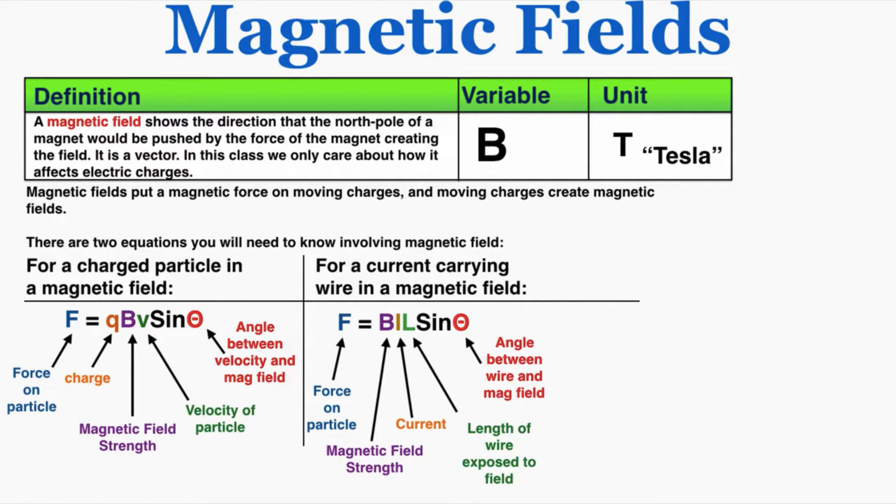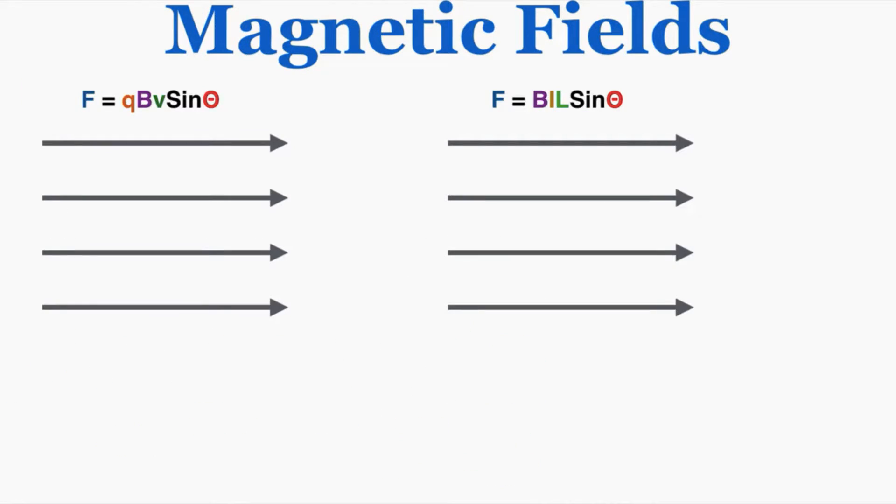That can be a little confusing, so I'm going to show you what I mean by theta. We can imagine we have magnetic field lines that look like this. On the left I have a charged particle moving in the field, and on the right I have a current carrying wire in the field.